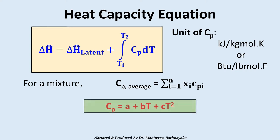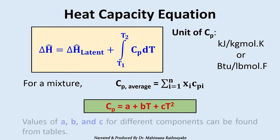For the heat capacity of a component, there are equations. As an example, heat capacity equals A plus B times temperature plus C times temperature squared. Values of A, B, and C for different components can be found from tables.